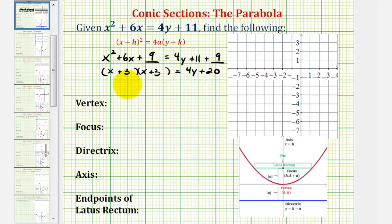So now on the left, we can write the quantity x plus 3 squared equals, and we're going to factor out 4, so we'll have 4 times the quantity y plus 5. Now that we have the equation in the correct form, the first thing we should recognize is that the x part of the equation is squared, and therefore, we'll have a vertical axis, or vertical axis of symmetry.